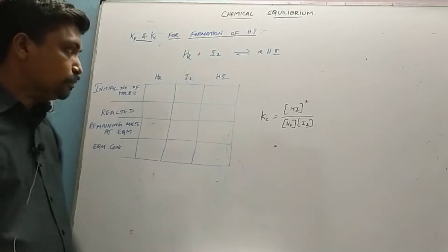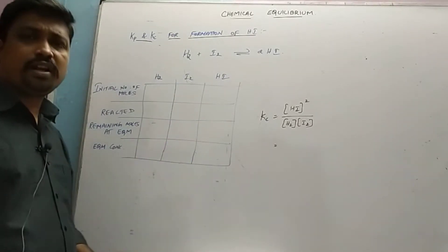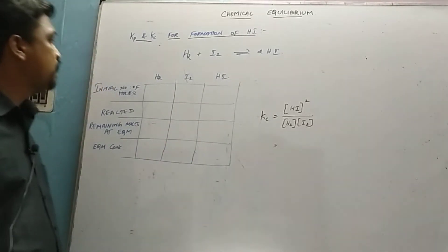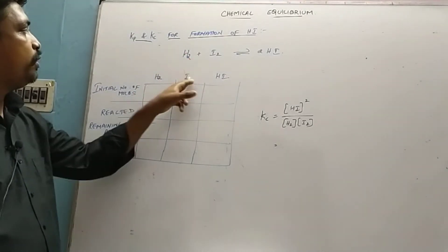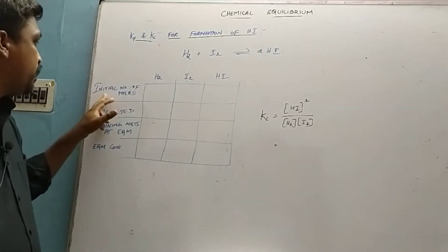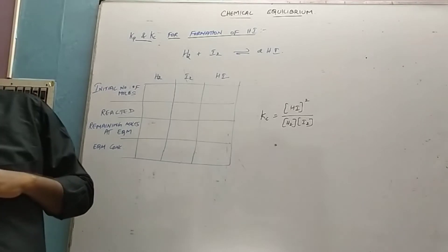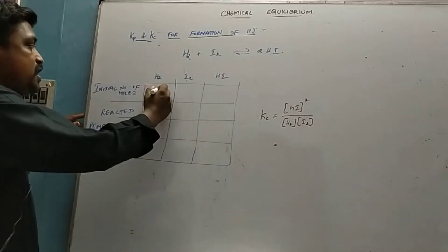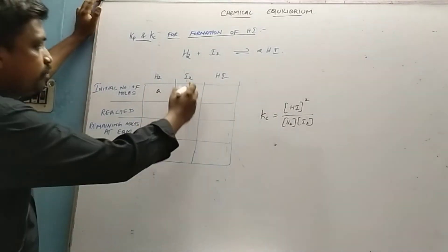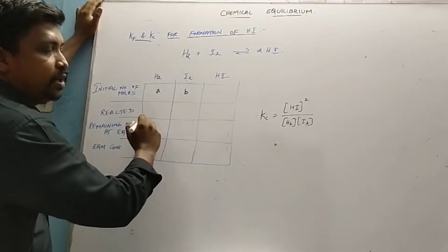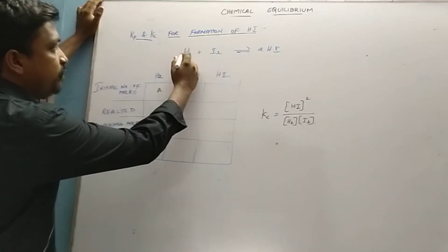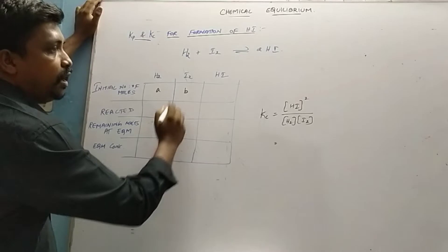Let us draw a tabular column for the calculation purpose. For hydrogen, iodine, and hydrogen iodide: initial number of moles of hydrogen is small a, and initial number of moles of iodine is small b. So initially we take small a amount of hydrogen and small b amount of iodine.